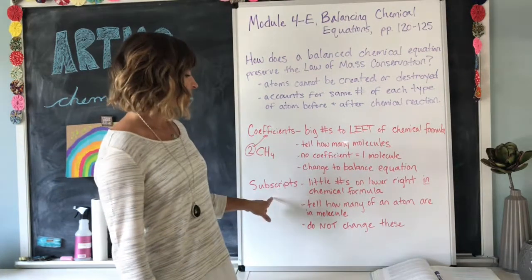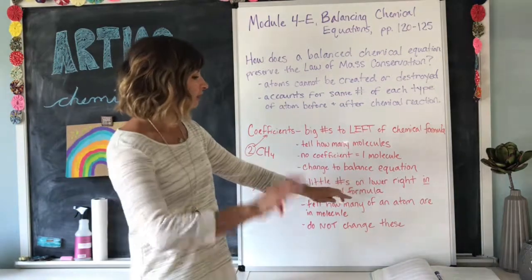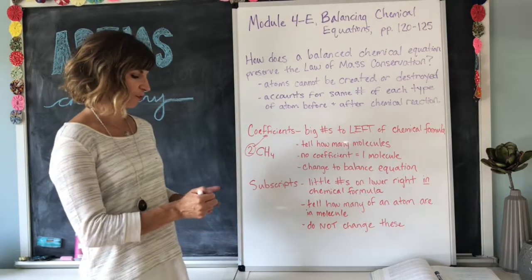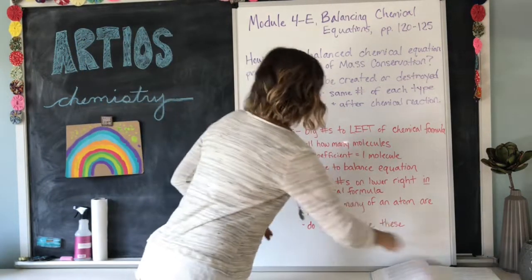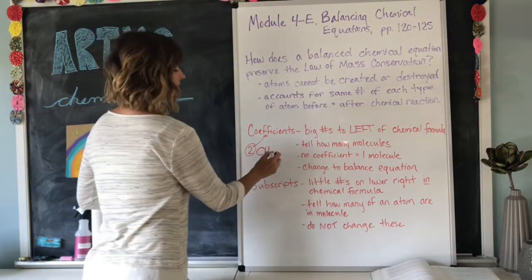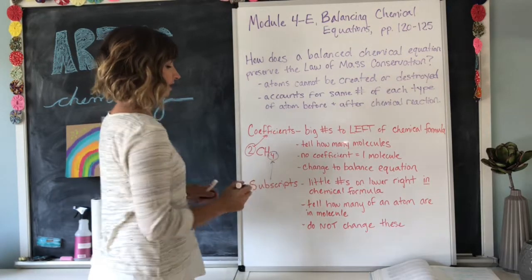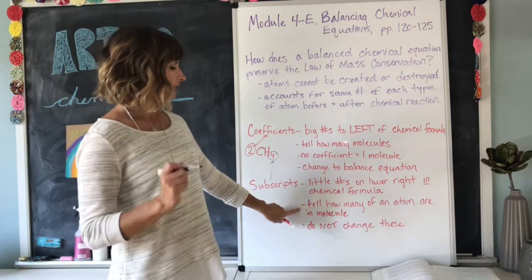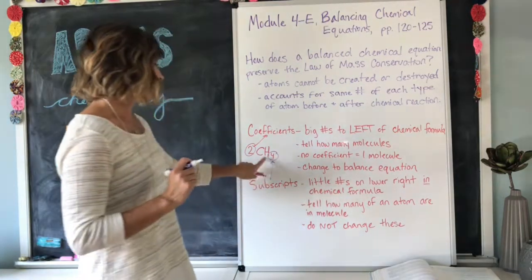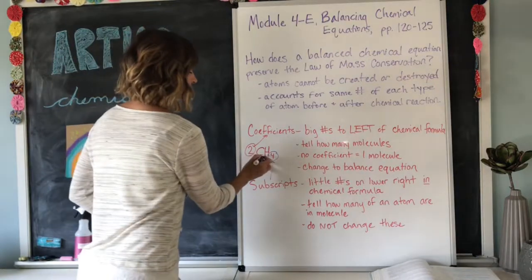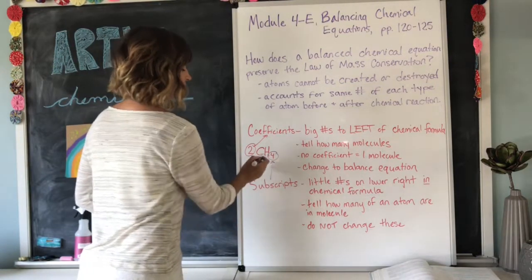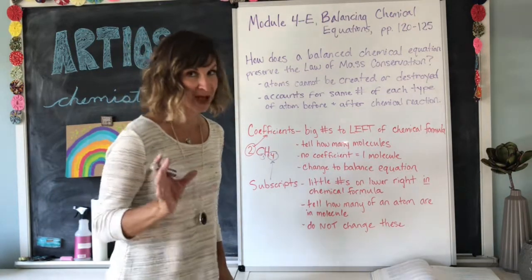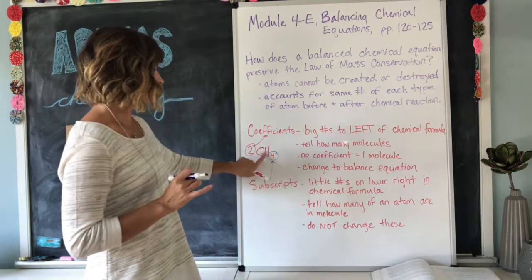Subscripts, on the other hand, are the little numbers on the lower right, and they're in the chemical formula. So looking back to CH4, methane, the subscript is the little four right there. The subscript tells how many of an atom are in the molecule. There is no subscript for the carbon, which means that there is one carbon present. We know that chemists can't be bothered to write that little one in there, so that is just understood.